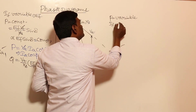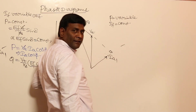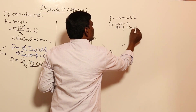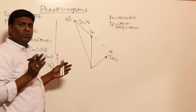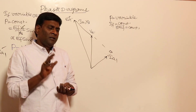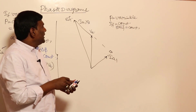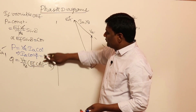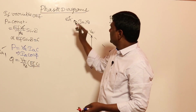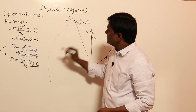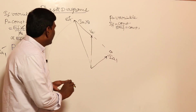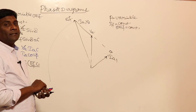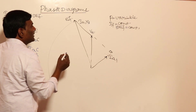Now P is variable and field current is constant, meaning EF is constant. Since EF is constant, the length of EF stays fixed regardless of where it points. The tip of EF traces a circle of constant radius as delta changes.